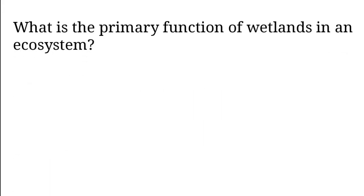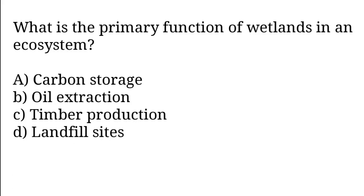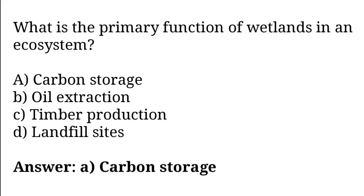What is the primary function of wetlands in an ecosystem? Options: Carbon storage, oil extraction, timber production, landfill sites. So the correct answer is option A. Carbon storage is the primary function of wetlands in an ecosystem.